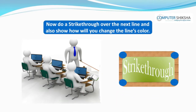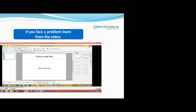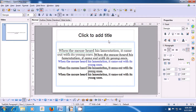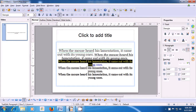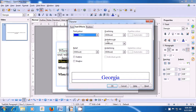Now, do a strikethrough over the next line and also show how you will change the line's color. If you face a problem, learn from the video. Let us now practice the use of the strikethrough option. To apply strikethrough, first select the line on which you want to apply it. Select the line using the mouse, touchpad, or keypad. Then take your pointer to the Format option of the menu bar, left-click, and click on the Character submenu.